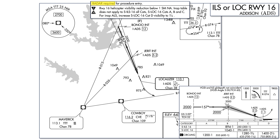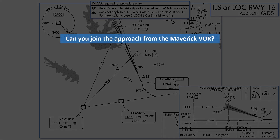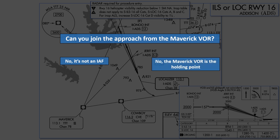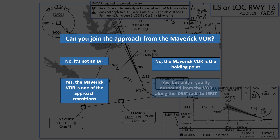This leads into Question 2: Can you join the approach from the Maverick VOR? No, it is not an initial approach fix and it's unlikely you'll receive radar vectors from there. No, the Maverick VOR is the holding point. Yes, the Maverick VOR is one of the approach transitions. Yes, but only if you fly outbound from the VOR along the 035 radial to Jarrett.